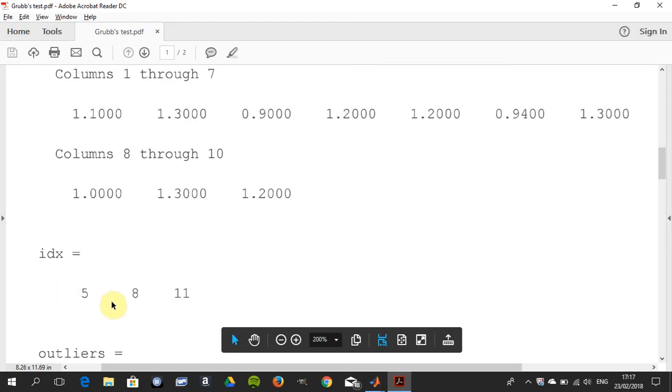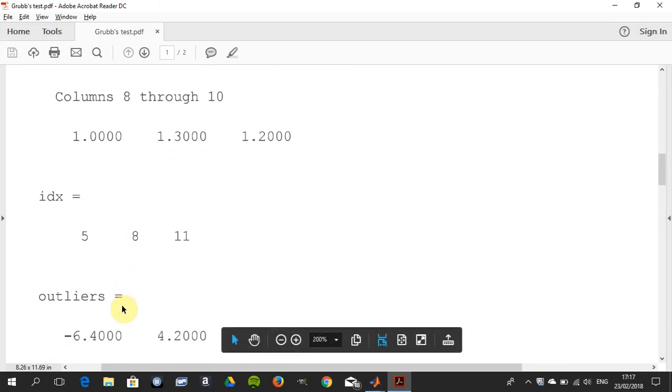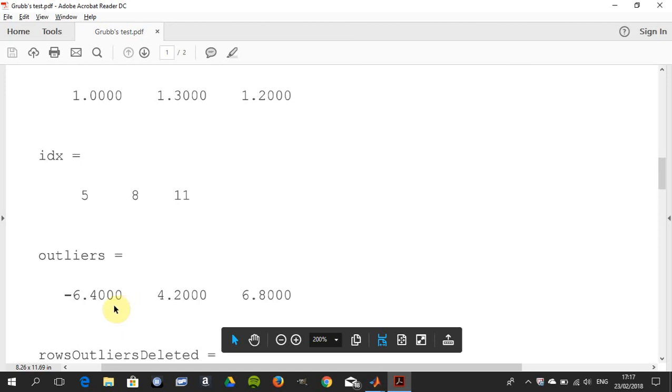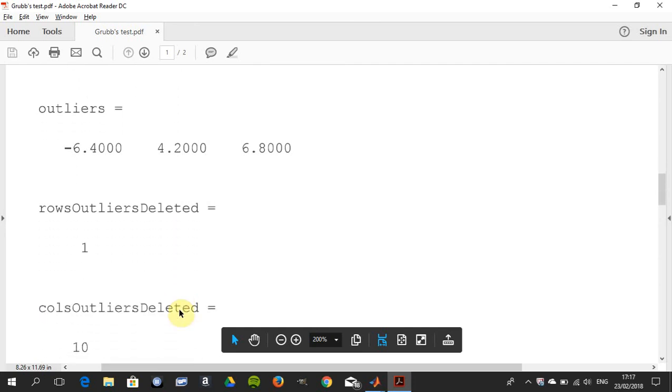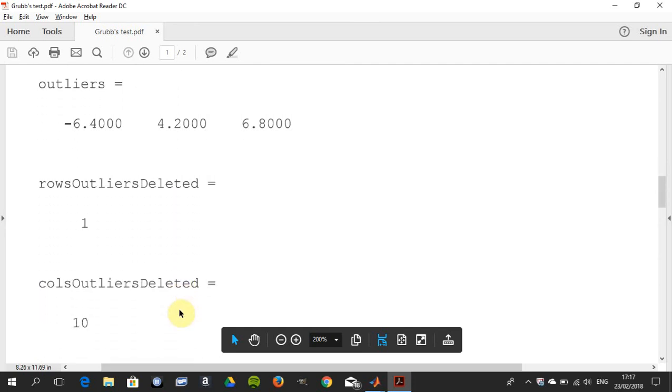The IDX is 5, 8, and 11. So position 5, position 8, and position 11 in the original array, they were the outliers. What were the outliers? Minus 6.4, 4.2, and 6.8. And then I got the size of B, and you can see that's 1 and 10 because obviously 13 was the original, and you deleted 3, or those 3 outliers, so you're going to end up with 10.